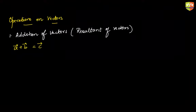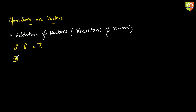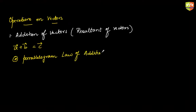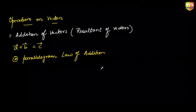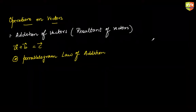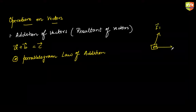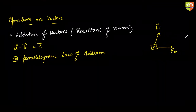There are multiple ways to add two vectors. The first method is the parallelogram law of addition, which is suitable for localized vectors but can also be applied to free vectors. For example, if there are multiple forces acting on a body — say force F1 and F2 — and you want to find their resultant, you can use the parallelogram law of addition.